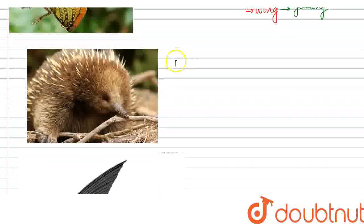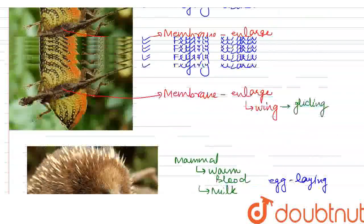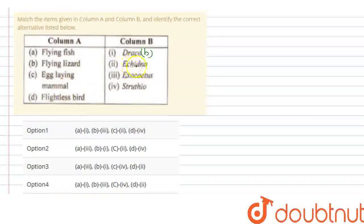Next, Echidna. It is a type of mammal that is warm-blooded and produces milk for its young ones. It has spines and a bird-like beak. It is native to Australia. This is an egg-layer, just like reptiles. It is an egg-laying mammal. So Echidna matches with egg-laying mammal.